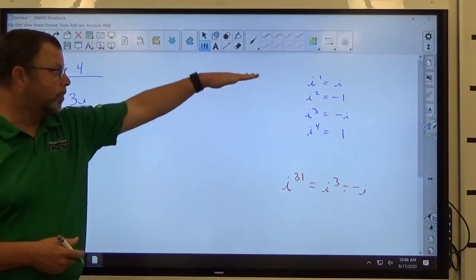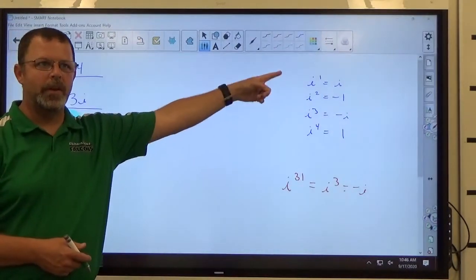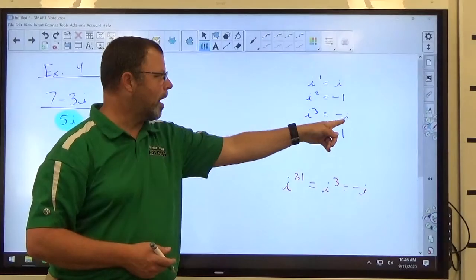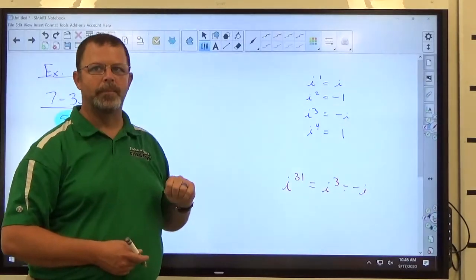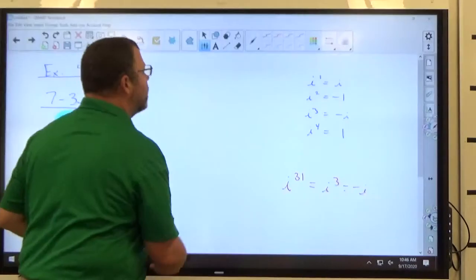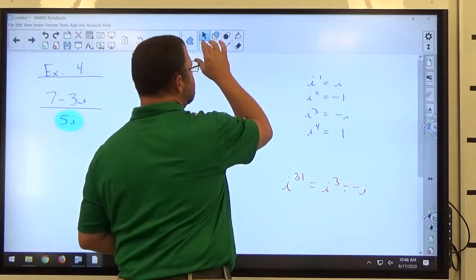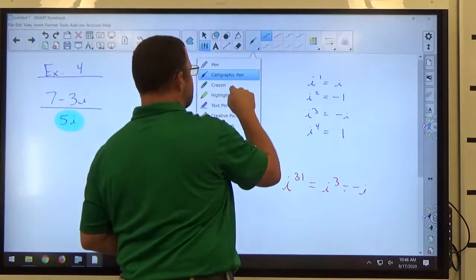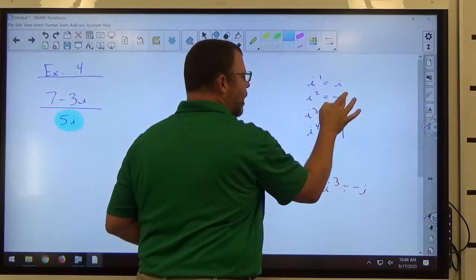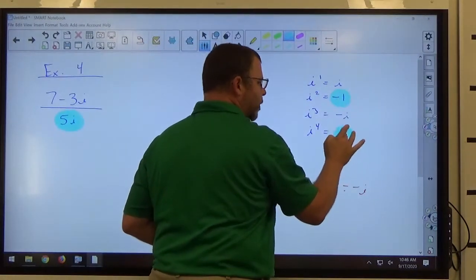Any power of i you're dealing with, it can be brought down to one of these four, and then you're going to bring it down to either i to the first, positive negative, or positive negative 1. And you'll notice in the possible things we can get out of this, we have a real number here and we have a real number here.